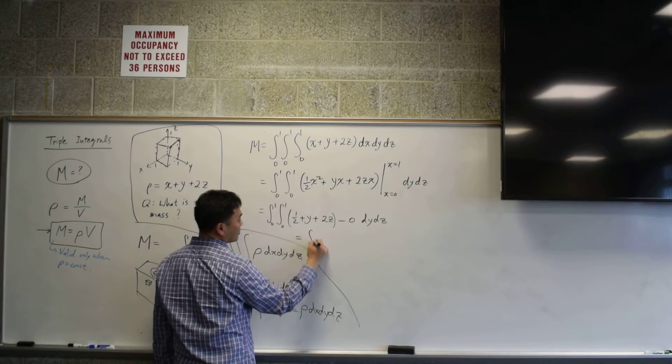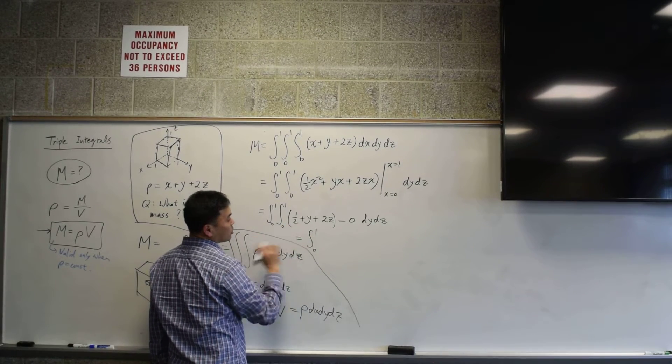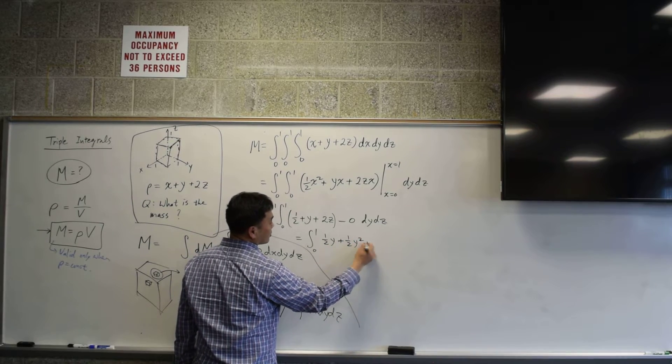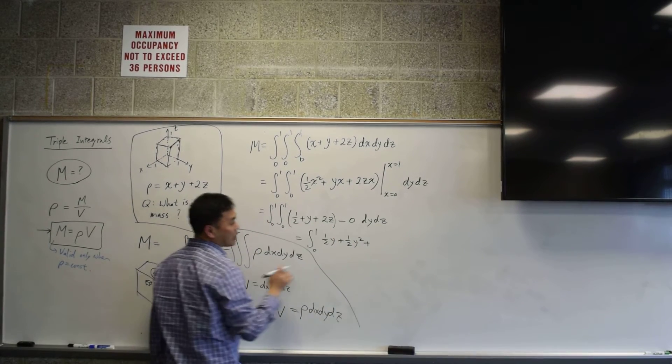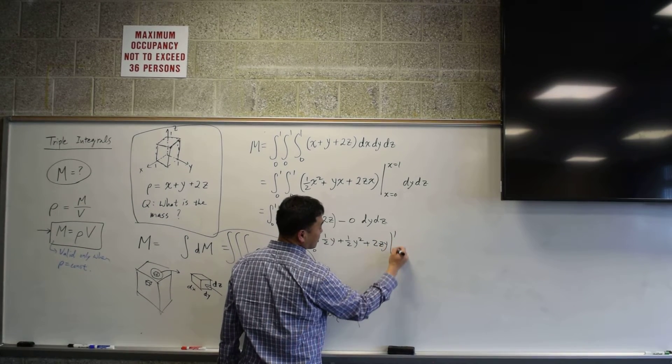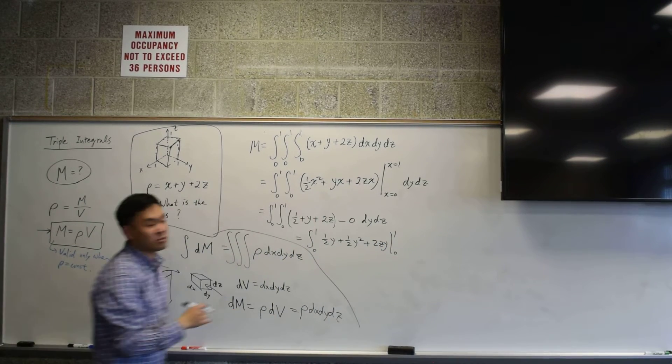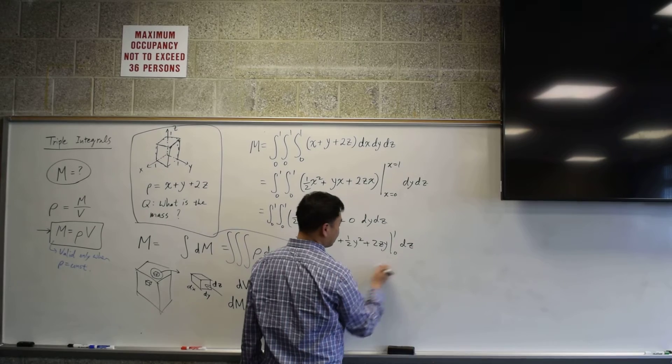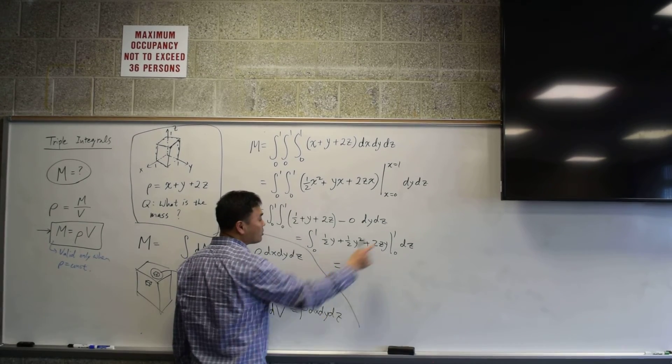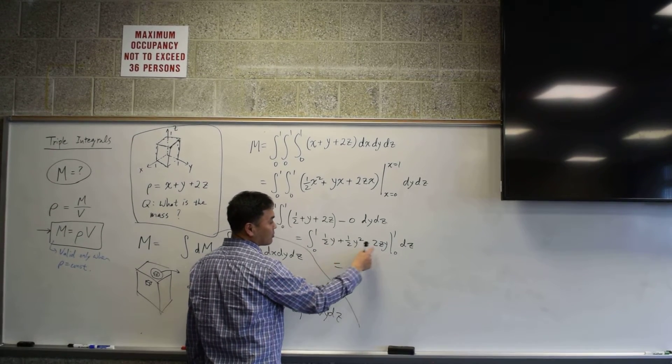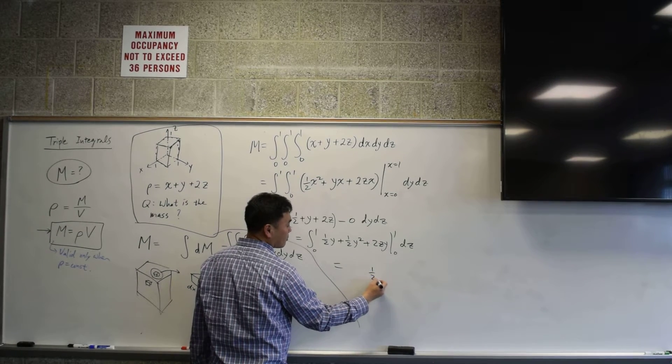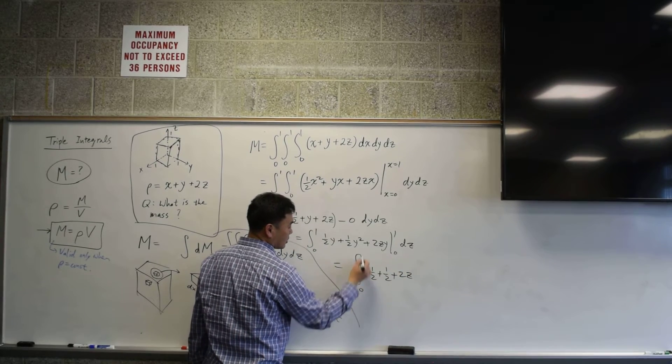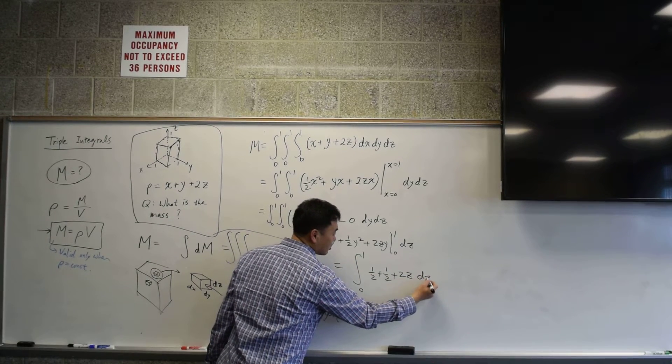Now integrate by y. Integrating one half by y, it's one half y. y by y, it's one half y squared. Plus, when you integrate 2z by y, it's 2zy. And then you have to plug in one and zero, and those values are supposed to go into y only. You don't plug it into z, because you're integrating by y. Now when you plug into y, it's one half plus one half and 2z. So it's one half plus one half plus 2z. And just one more integral, and then we're done.